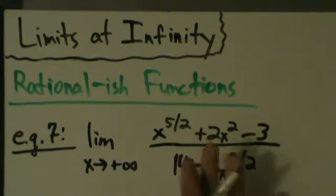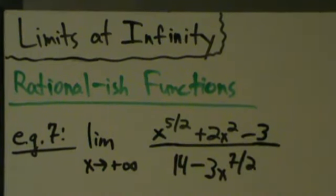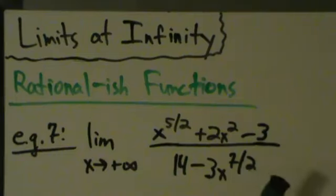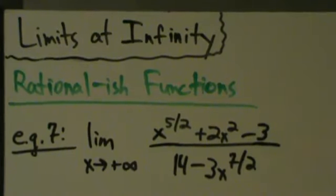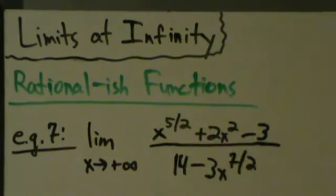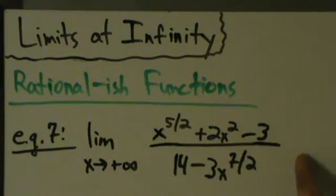But let's not do this with the shortcut method. If you're doing something like this on a quiz or a test, you're probably going to have to show some work and do it the long way. So I want to run through this one that way. How do we do this the longer way? We do it the same way we did rational functions: find the highest power of x that appears everywhere in the top and the bottom, then multiply the top by 1 over x to that power, and multiply the bottom by the same thing.